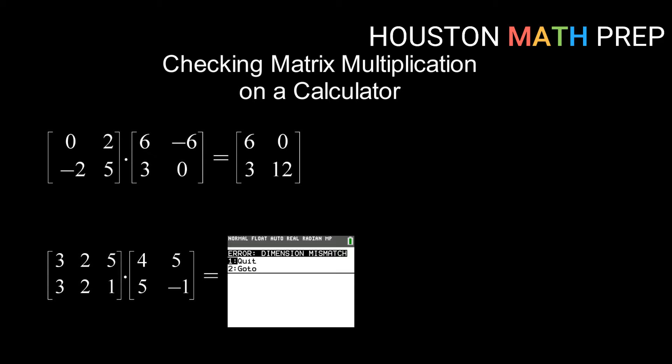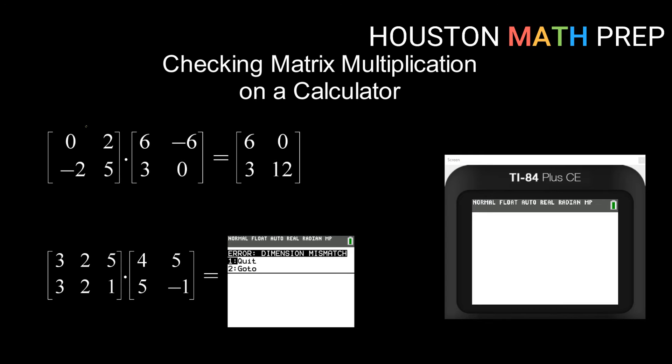Of course, we know how to do this by hand and we can certainly do that. But the calculator can do it as well, and that can help you check your work to make sure you didn't make any small errors. So let's take a look at this example: 0, 2, -2, 5 times 6, -6, 3, 0 that we did in our introduction to matrix multiplication video. The first thing that you need to do is enter each matrix separately. So I'm going to enter this matrix in matrix A and this one in matrix B. If I enter into my matrix menu, I've actually already got them in there, but just as a reminder of the process,